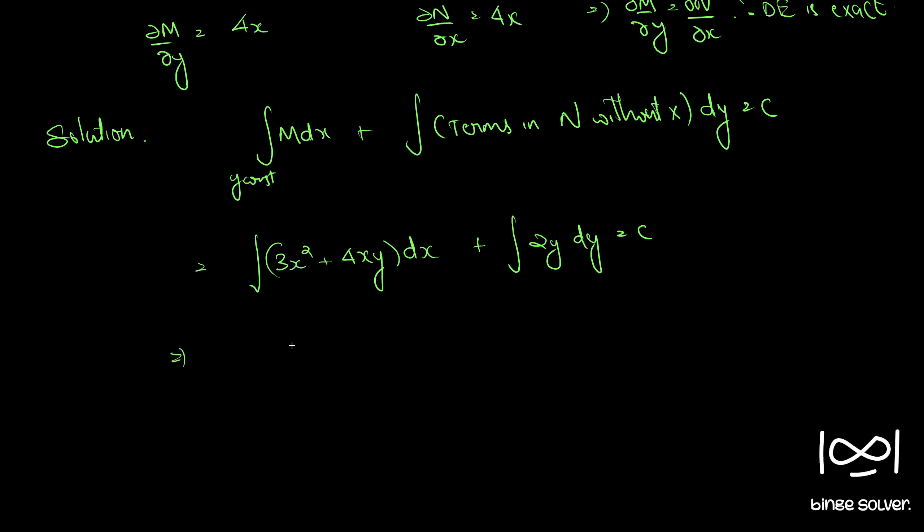Therefore we have: 3x³/3 + 4y·x²/2 + 2y²/2 = c.